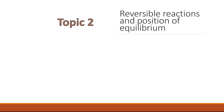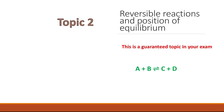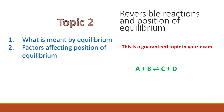Topic 2 is reversible reactions and position of equilibrium — also a guaranteed topic in your exam. You should know what is meant by equilibrium, when equilibrium will be reached, and the different factors affecting the position of equilibrium. That includes temperature, and you should know which reaction — whether the forward or the reverse — is exothermic and which is endothermic.